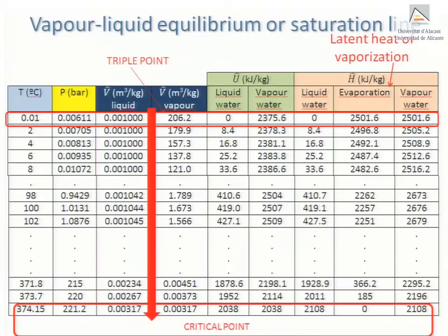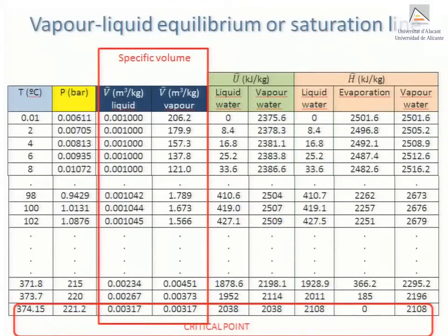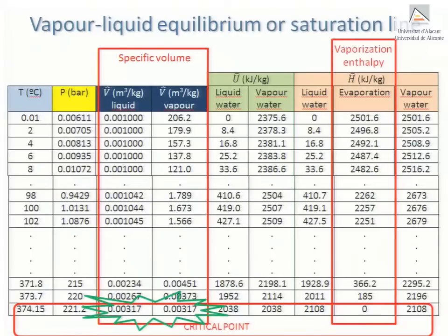Let's look at what happens in the specific volume column as we move down the saturated vapour table. This is equivalent to increasing temperature along the vapour-liquid equilibrium line, moving from the triple point to the critical point. We notice that the specific volumes approach each other in value as we go down the table, until becoming equal at the critical point, because liquid water and water vapour are one and the same thing at that point. Similarly, the enthalpy of vaporization decreases steadily as we go down the table, until becoming zero at the critical point. In effect, the energy needed to vaporize liquid water decreases as we move along the vapour-liquid equilibrium line to the critical point — once there, it literally costs no energy to change one state into the other, because they are in fact just the same state.